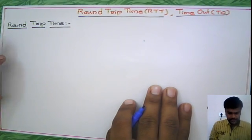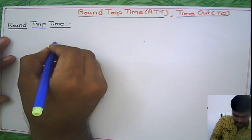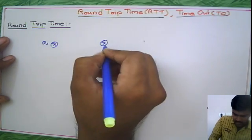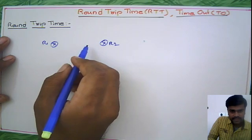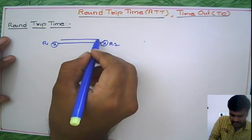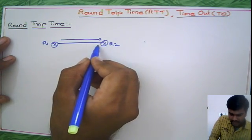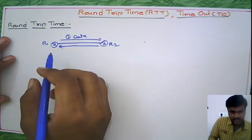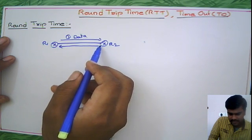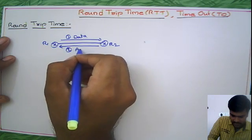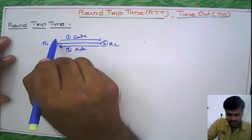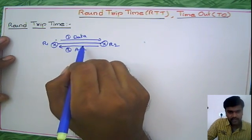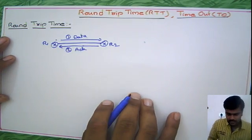The next definition is round trip time. From router R1 to router R2, we first send data from R1 to R2, and then R2 gives the acknowledgement for that packet. The total time taken from sending the data to receiving the acknowledgement back is what we call round trip time.